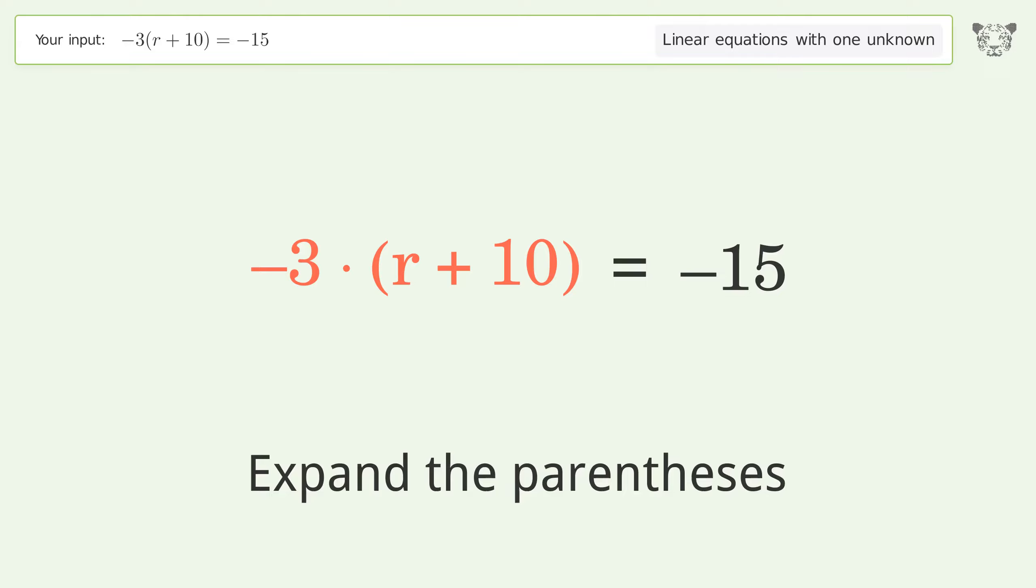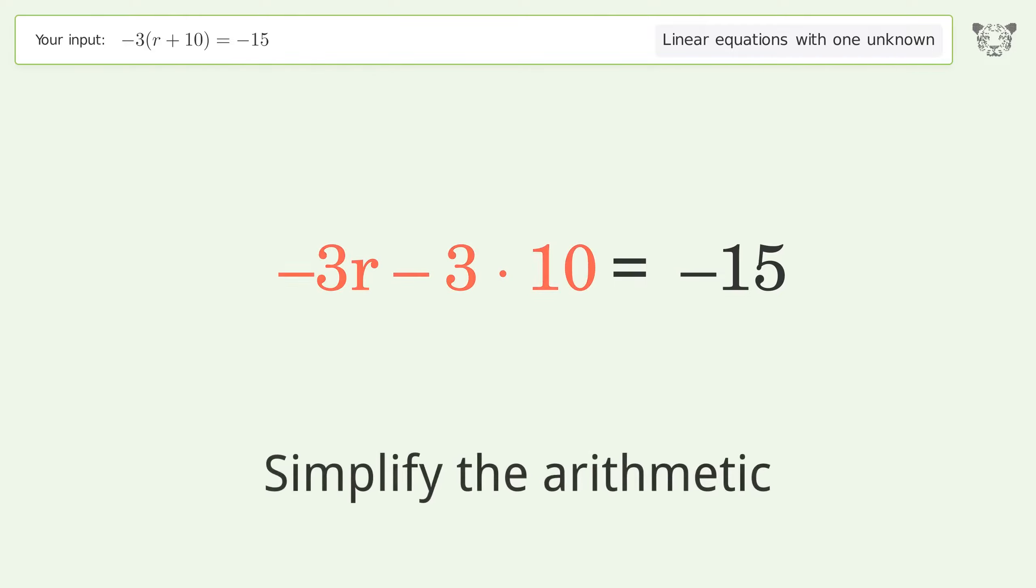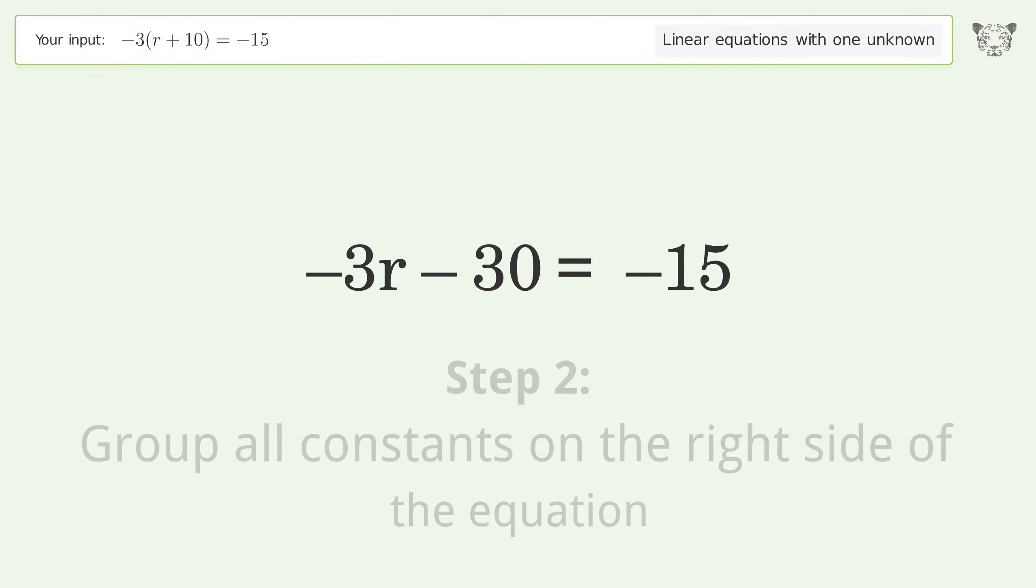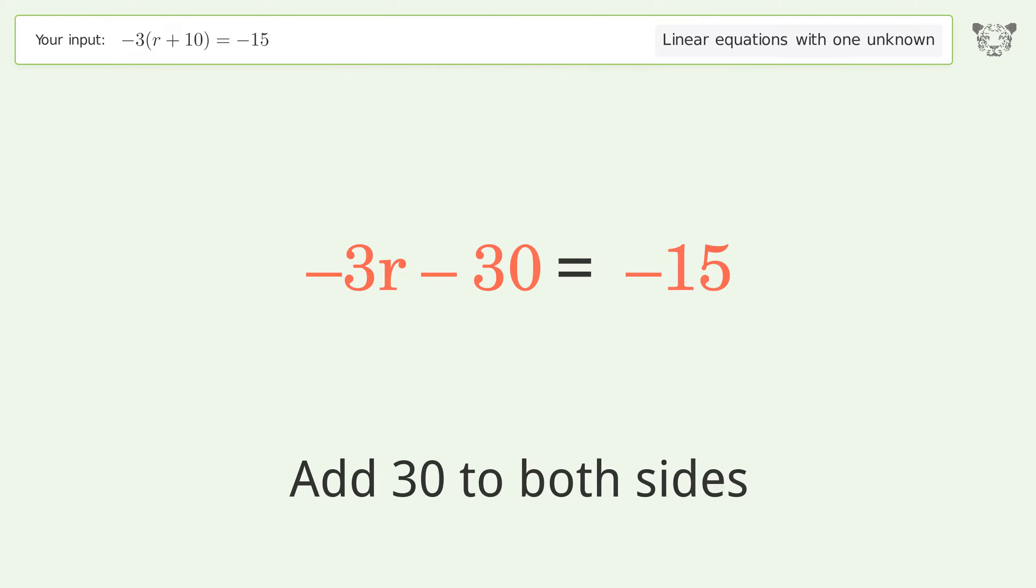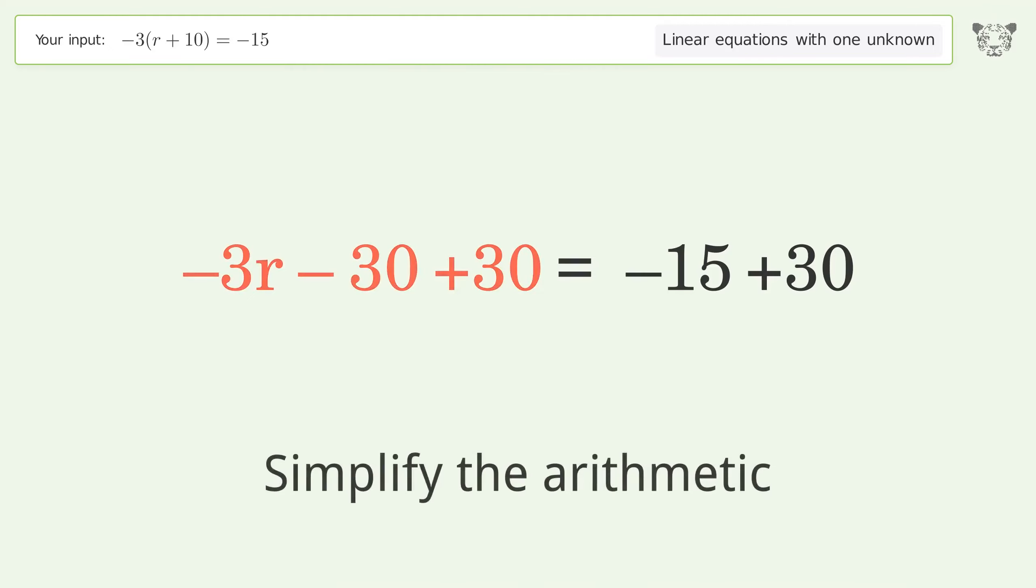Expand the parentheses. Simplify the arithmetic. Group all constants on the right side of the equation. Add 30 to both sides. Simplify the arithmetic.